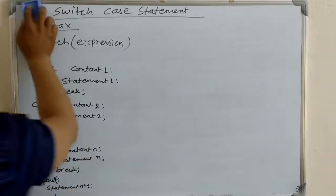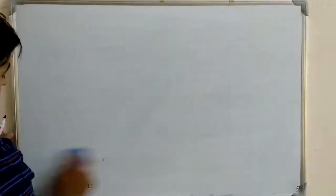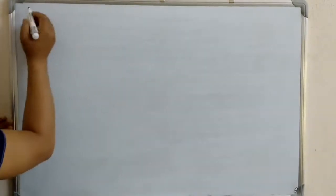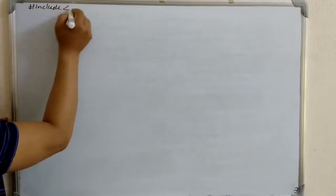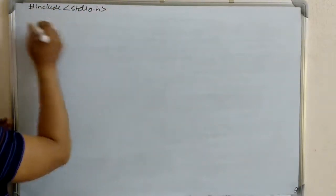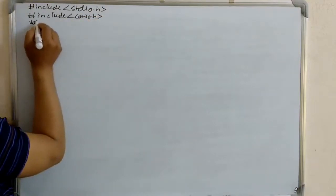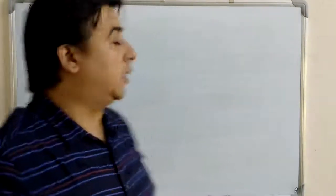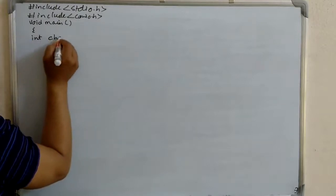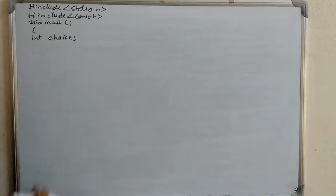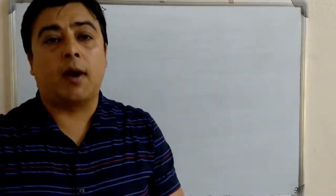Now let's write a C program to display the day of the week. For example, case one corresponds to Monday. Let's start with the header files: #include stdio.h and #include conio.h. Then start the main function with curly braces. We need to declare one variable to choose the option, so we write 'int choice'. The user enters a number according to their choice.